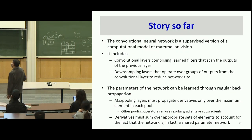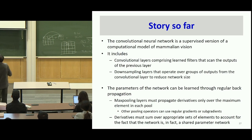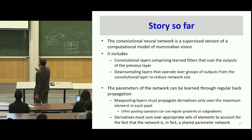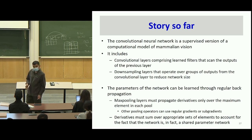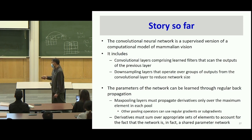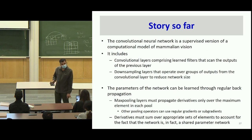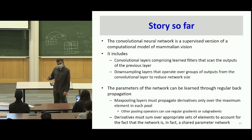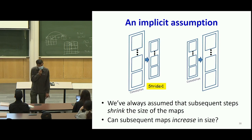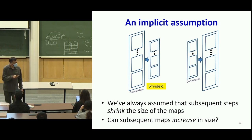The story so far: the convolutional neural network is a supervised version of a computational model of mammalian vision. It includes convolutional layers with learned filters that scan the outputs of the previous layer, and downsampling layers that operate over groups of inputs to reduce network size. The parameters can be learned through regular backpropagation. Max pooling layers propagate derivatives only over the maximum element, whereas other pooling operators distribute derivatives. Derivatives must always sum over appropriate sets of elements to account for the shared parameter network structure.